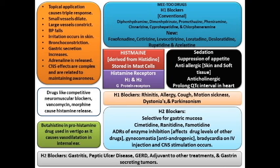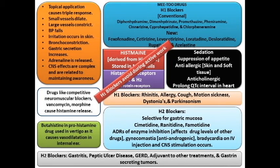H2 blockers are used in gastritis, GERD (gastroesophageal reflux disease), peptic ulcer, and as adjuvants to other treatments. Sometimes ranitidine or famotidine are given purely for symptomatic relief. A rare but important indication is Zollinger-Ellison syndrome — a gastrin-secreting tumor — in which H2 blockers are also given in large proportions.